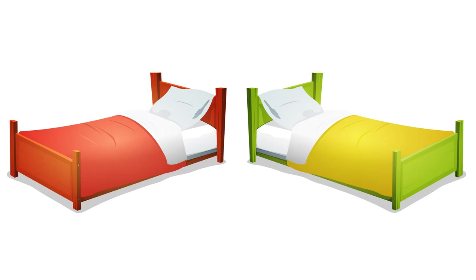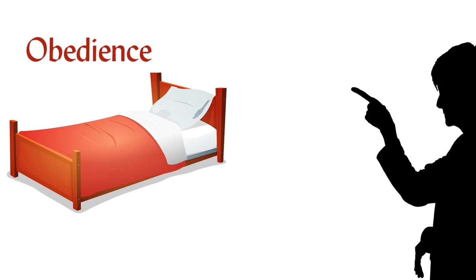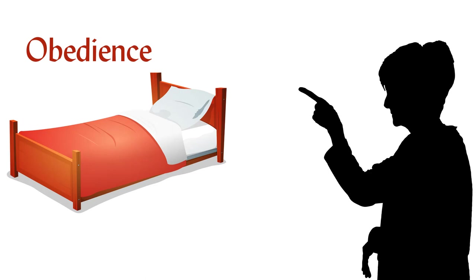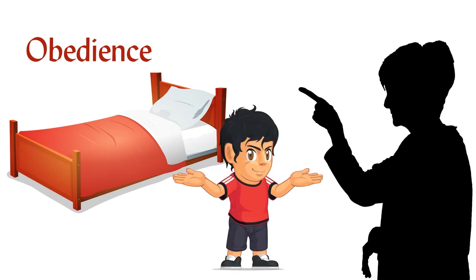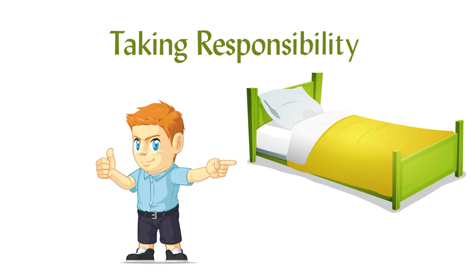But the motivation was different. In the first scenario, obedience was the motivation and the adult experienced some aggravation or stress because this was not the first time that the teenager had to be told what to do. Certainly, like everyone else, teenagers do not like to be told. In the second scenario, taking responsibility is the motivation.